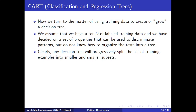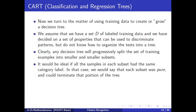Any decision tree will progressively split the set of training examples into smaller and smaller subsets. Ideally, all samples in each subset should have the same category label — we say that subset is pure and can terminate that portion of the tree. Our ultimate goal is that at the leaf node, we should have only a single category with no mixed categories.